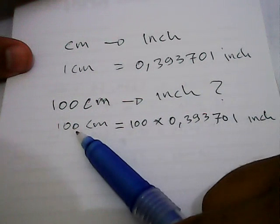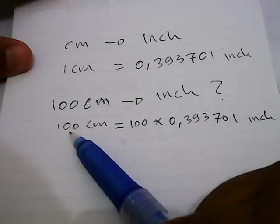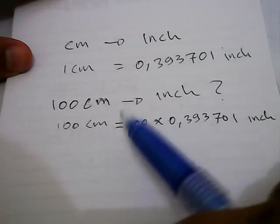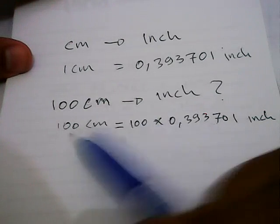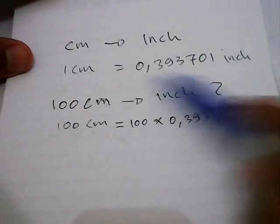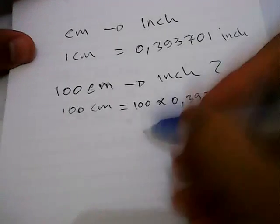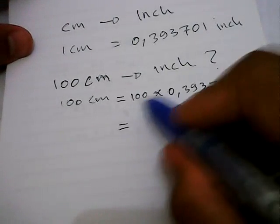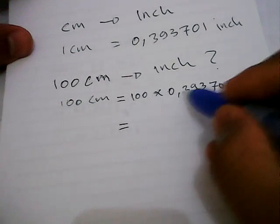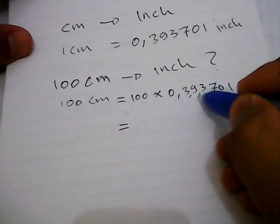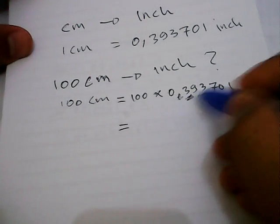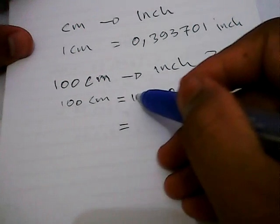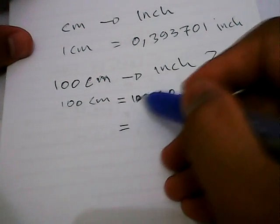the same thing with this example problem. 100 centimeters equals 100 multiplied by 0.393701. We have 100 here, so we need to move the decimal point twice.